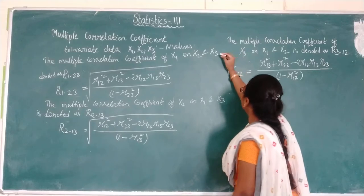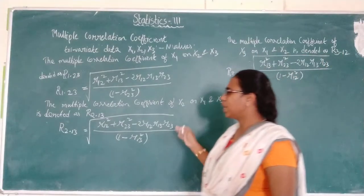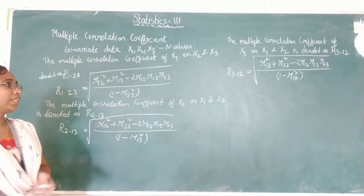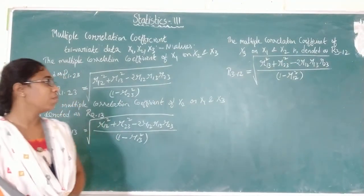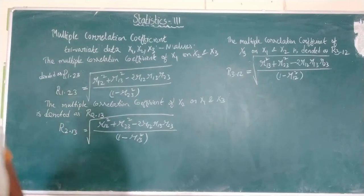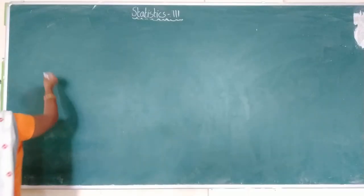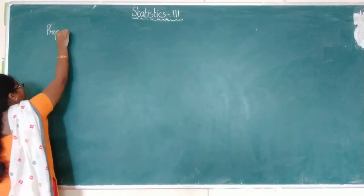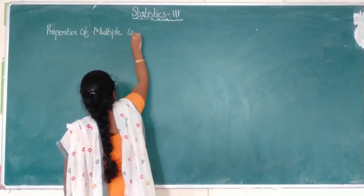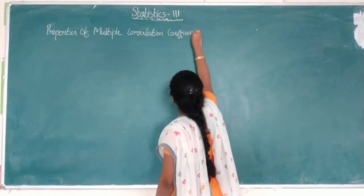While solving problems, you can write R squared first and apply the square root at the end. You can write either R squared 3.12 or R3.12 — that depends on the requirement. So this is about multiple correlation and the multiple correlation coefficient. Now we will see the different properties of the multiple correlation coefficient.